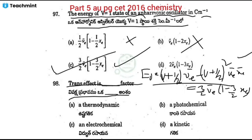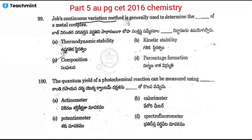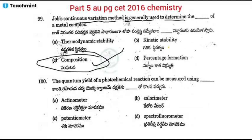The trans effect is a kinetic property — it relates to the reactivity or rate of substitution in square planar complexes. Job's method of continuous variation is used to determine the composition of a catalytic metal complex. The composition of a complex can be easily determined by Job's method. Option C is correct.